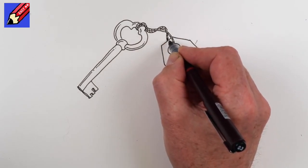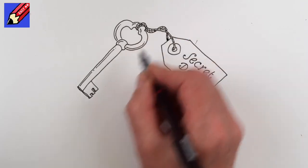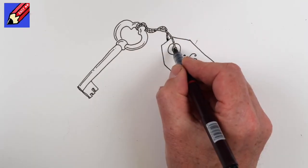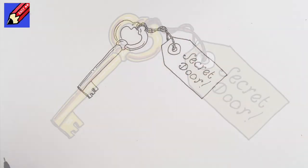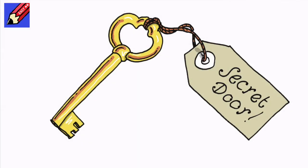That can be a bit darker as it's going under there and under there. Then I think all we need to do is just put a little bit of shade there, and there you go—how to draw a key to the secret door.